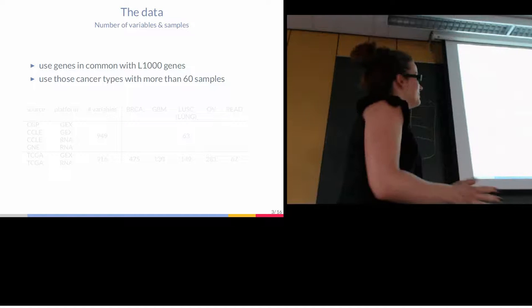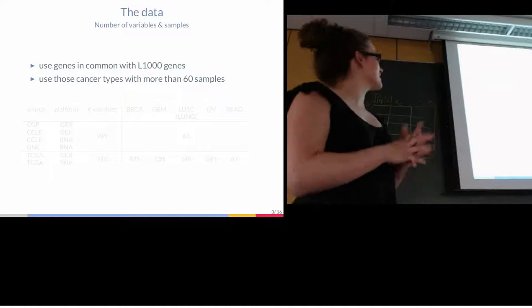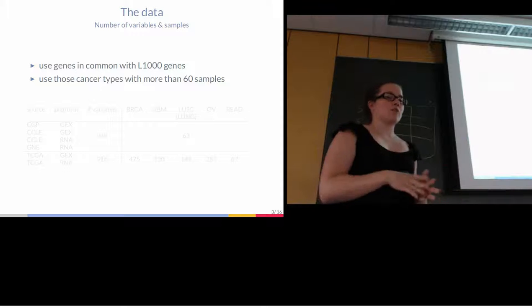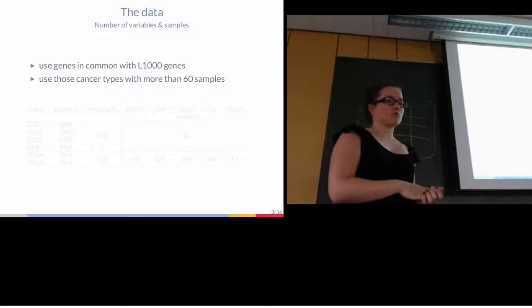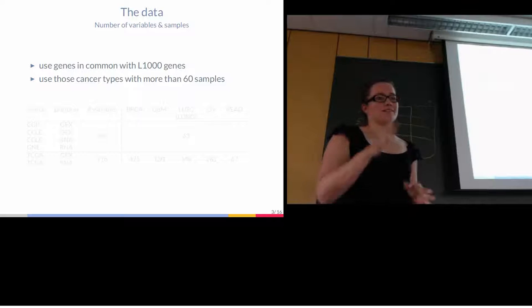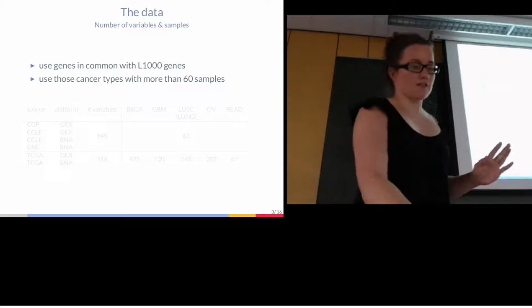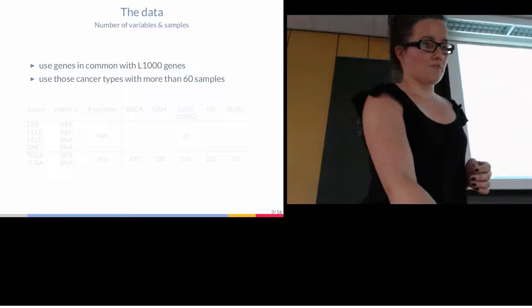So the data. As you know, gene expression data, RNA-seq, we measure a huge number of genes and we have only few samples. So here we will reduce the number of genes to the thousand genes identified by the L1000 project to be relevant in cancer, and we only use cancer types with more than 60 samples. The 60 is a bit arbitrarily chosen, but could be 50 or 40. We just picked something where we had some data.